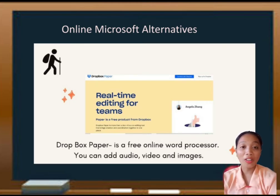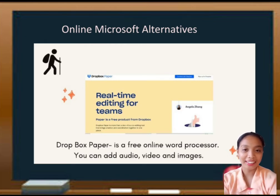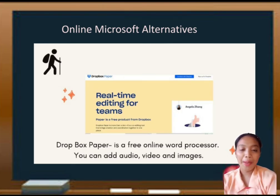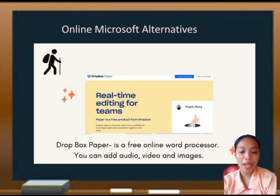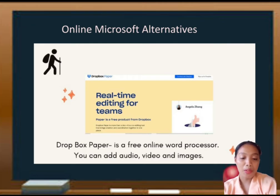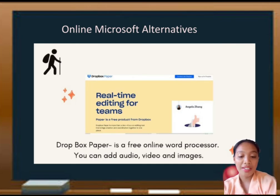Next are online Microsoft alternatives. The first one is Dropbox Paper — a free online word processor where you can add audio, video, and images. Dropbox Paper is more than a document; it is a workspace that brings together creation and coordination in one place. Users can write, review, edit, design, run meetings, and manage tasks. To start using Dropbox Paper, any user will need to have a Dropbox account. It also allows access to various apps like YouTube videos, Trello cards, or SlideShare decks.